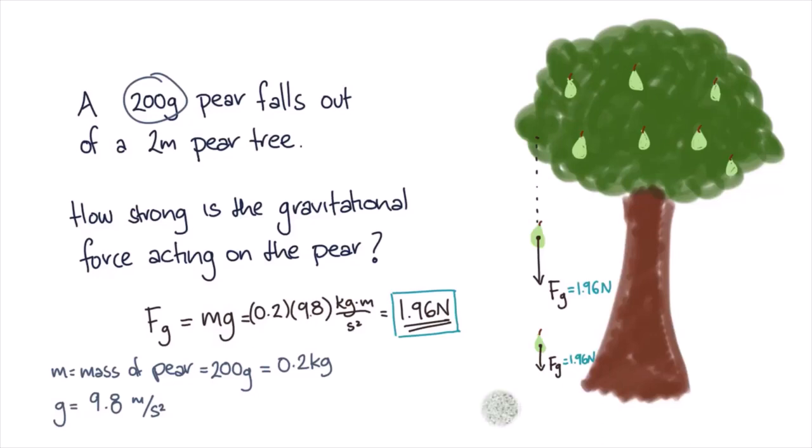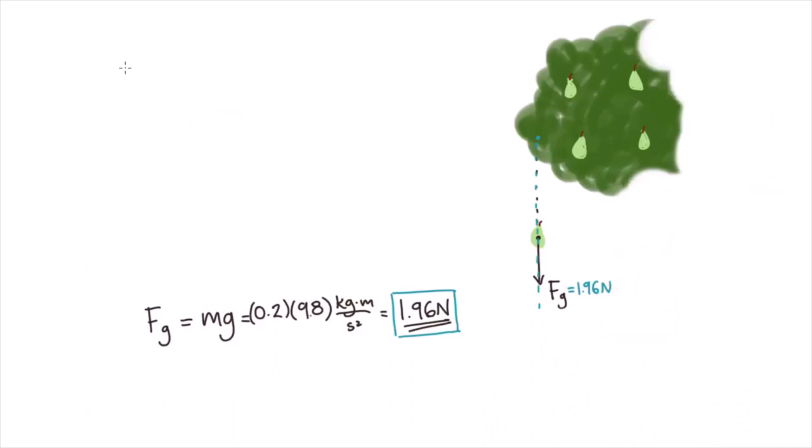Force due to gravity also affects objects on the ground. After the pear hits the ground it is still experiencing the same gravitational force, though in this case gravity is cancelled out by the normal force of the earth's surface that acts to prevent objects sinking into the ground. For our next example we'll investigate an object on an incline.